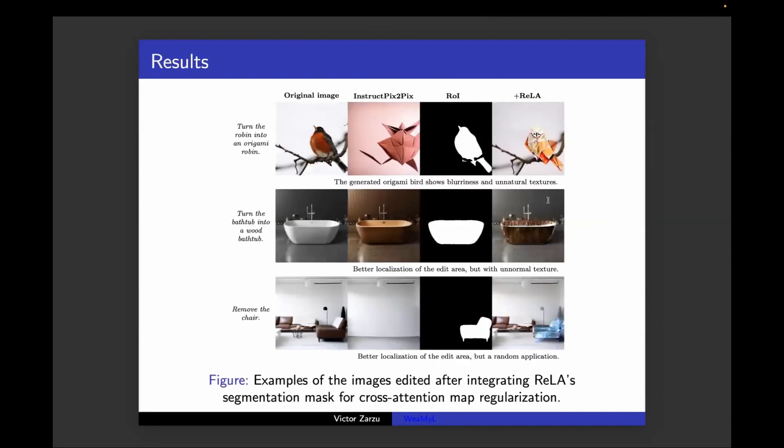However, even if the edit localization is improved, the experiments did not conclude with good results in the edit application, meaning that the localization is good, but as can be seen here, the wood does not look natural. And here the localization is good, but it's not able to remove the chair. It just has a random application of the edit.